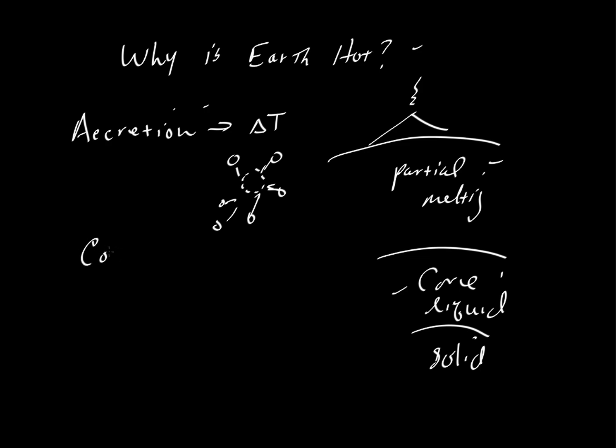There are other processes as well, though. So, for example, there is core formation. We start out with a planet that is probably somewhat homogenous, at least when it was smaller. But if it has a mixture of metal and silicate materials,